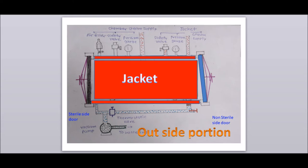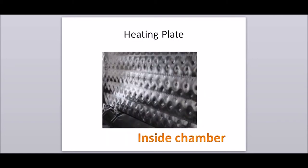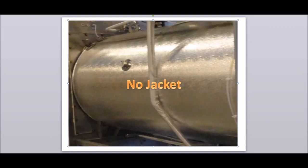The second part is the jacket of the autoclave, which covers the chamber. In some autoclaves, a jacket is not provided. Instead, a heating plate is provided inside the chamber. In this case, there is no jacket and the chamber is insulated.